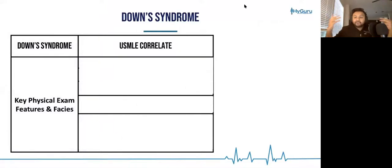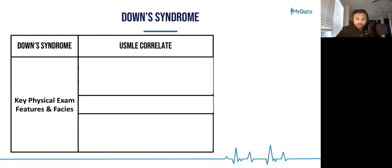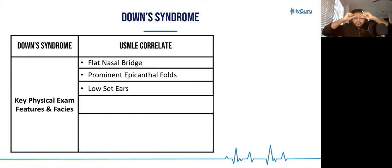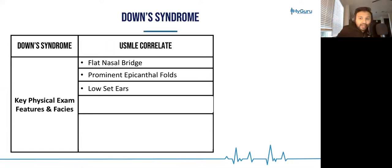Let's go through the key physical exam features and faces you will see on the USMLE. Patients with Down syndrome are going to have a flat nasal bridge and prominent epicanthal folds, which are right near the nose and the eye flaps.